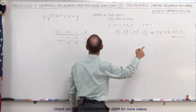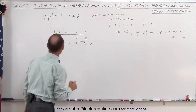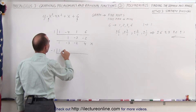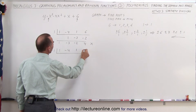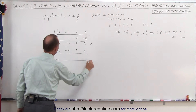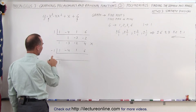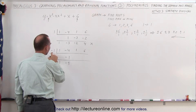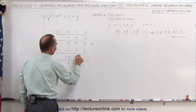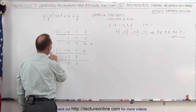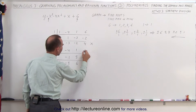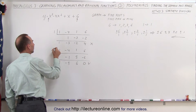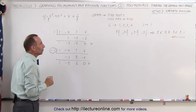We tried positive 1, now we're going to try negative 1. Next try is negative 1, and we have 1, negative 4, 1, and 6. Drop down the 1: negative 1 times 1 is negative 1; add it together, I get negative 5. Negative 1 times negative 5 is positive 5; add together, I get 6. Negative 1 times 6 is negative 6; add it together, I get 0. Bingo! One of our roots is x equals negative 1.